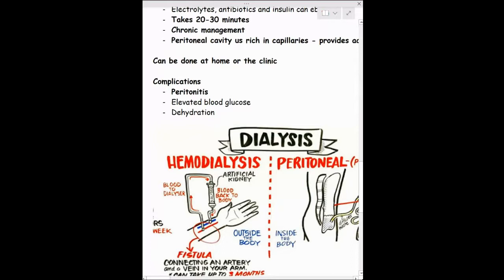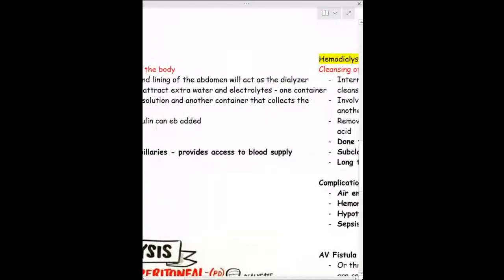Complications of peritoneal dialysis include peritonitis — because we're putting something foreign into a cavity, there's a risk of infection. Elevated glucose levels occur because of the high-dextrose solution. Dehydration and hypotension can also occur because we're removing fluid. For hemodialysis, the dialyzer cleanses blood outside of the body. The line is placed through either the jugular or subclavian, and it's usually a long-term treatment.